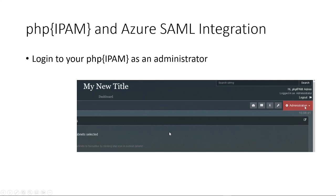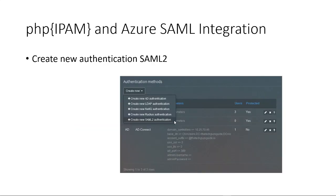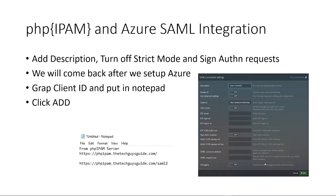We want to go to Administration and then Authentication Methods. We want to create a new one, so we hit Create New. The drop-down will show up and we want to select SAML 2. In here, we want to name it something or give it a description — I wrote Azure Connect.